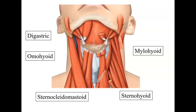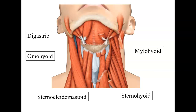Digastric means two bellies. In this drawing, the anterior belly has been cut so you can see an underneath muscle better. That deeper muscle is called the mylohyoid. Its job is to elevate the hyoid and depress the mandible. That's called the mylohyoid.